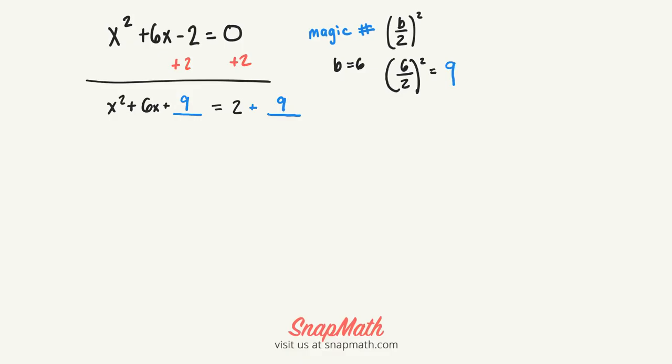So what's the square root of x squared? Well, it's x. This first sign is plus, and then the square root of the 9 is 3. And that's squared. Equals 11.